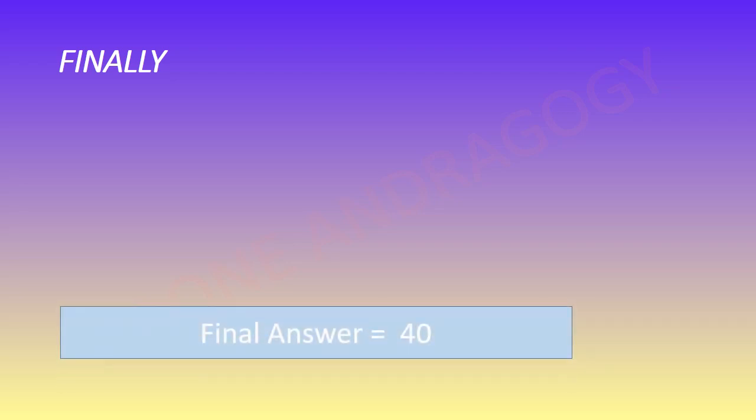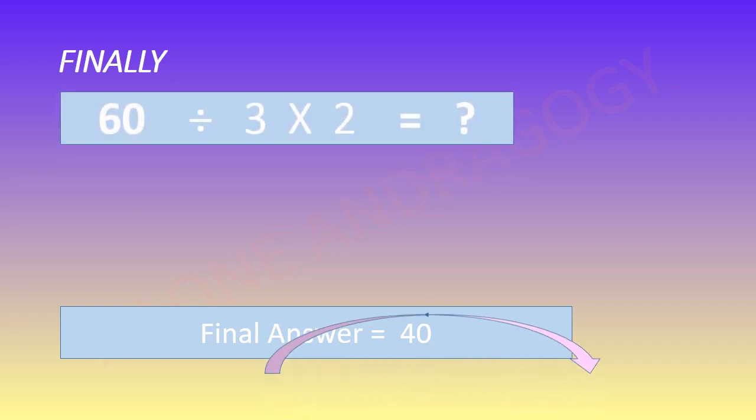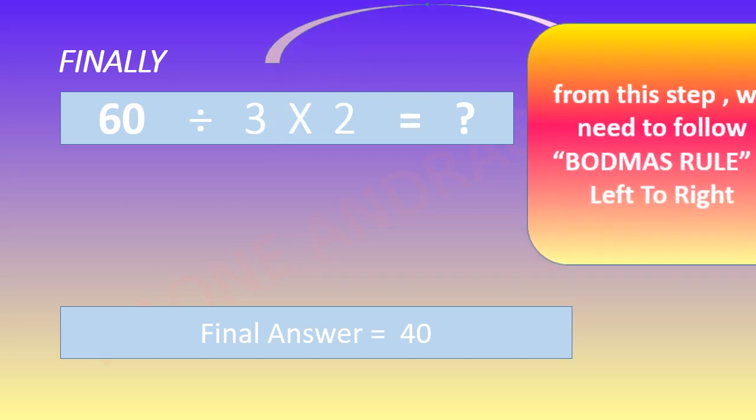Now let's take the next problem: 420 divided by 7 into 6 into 5. Here let's consider the division and bracket, ignore the rest.